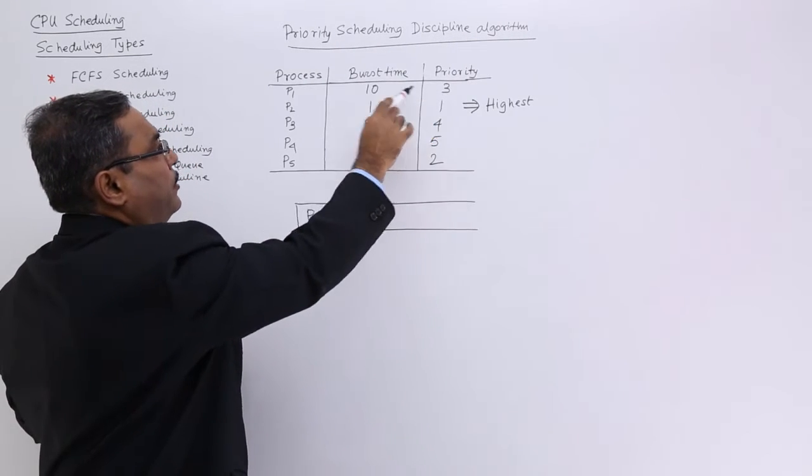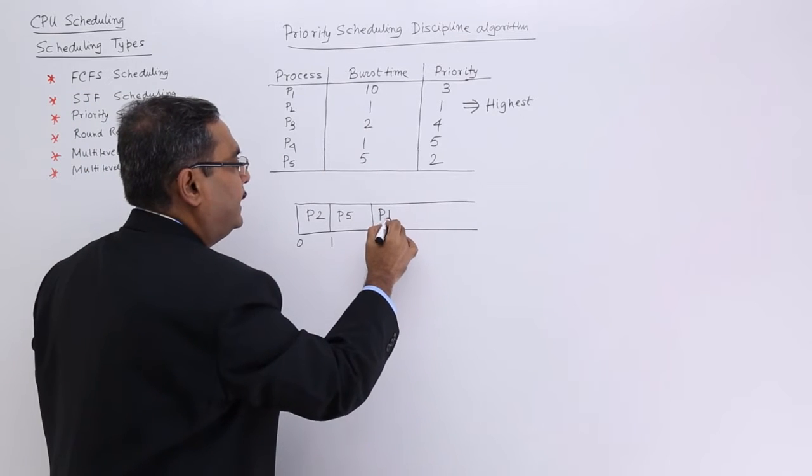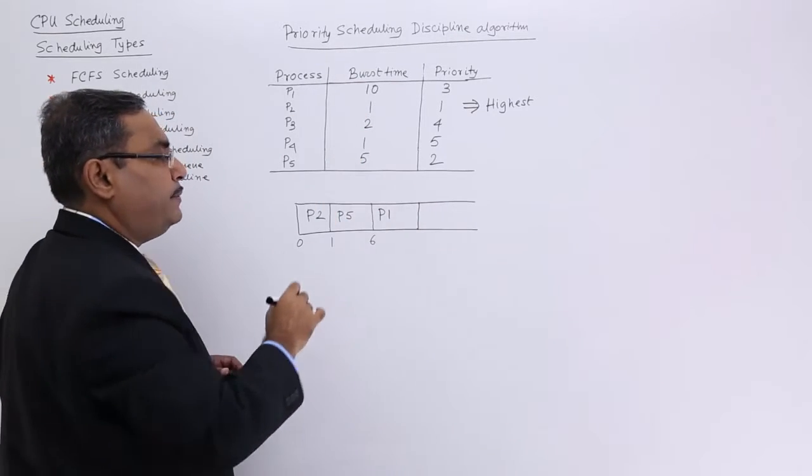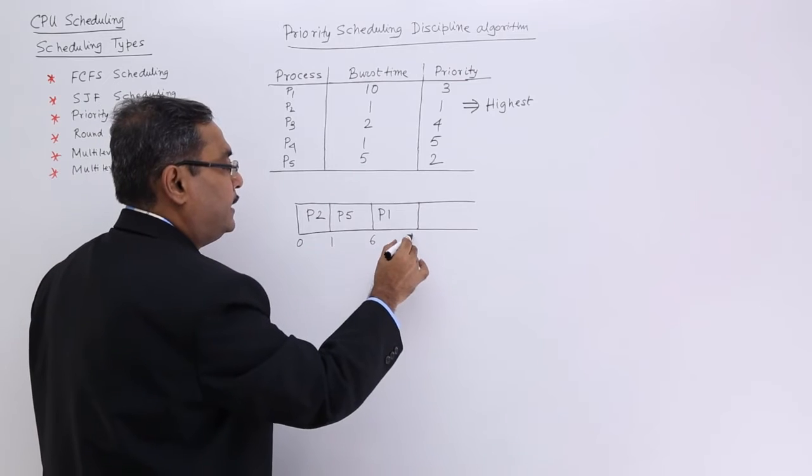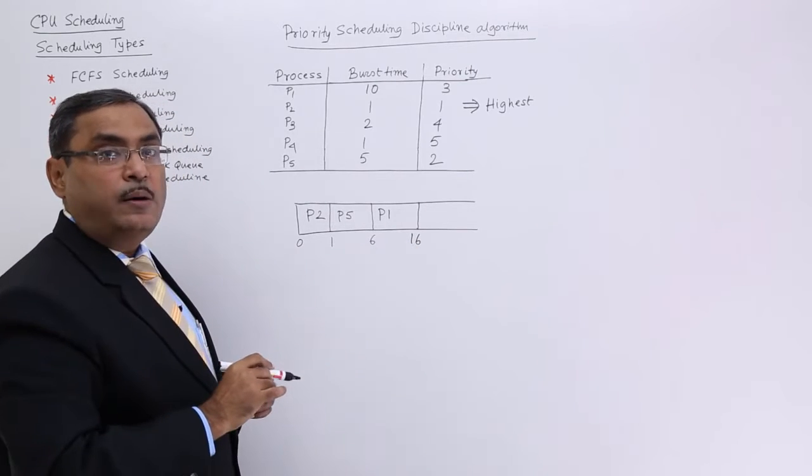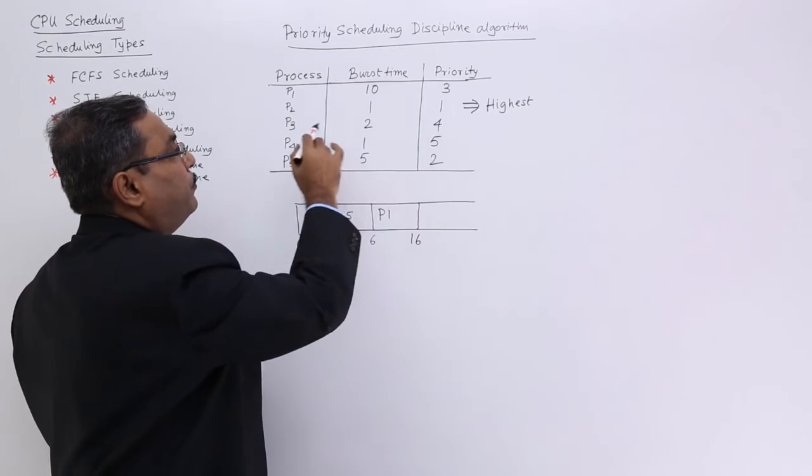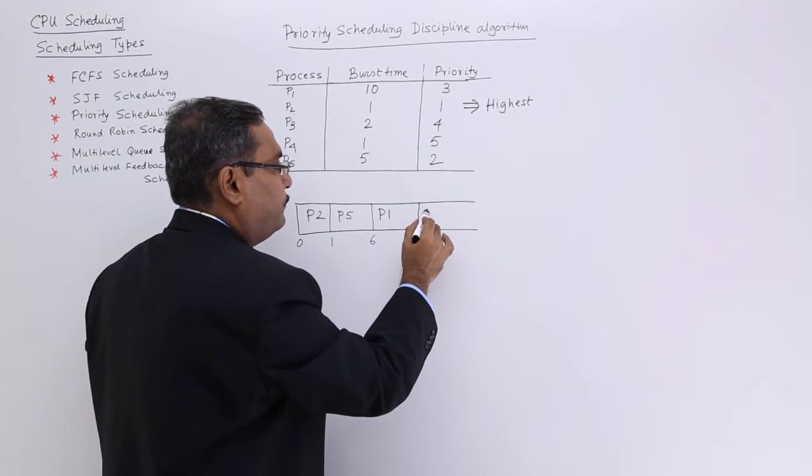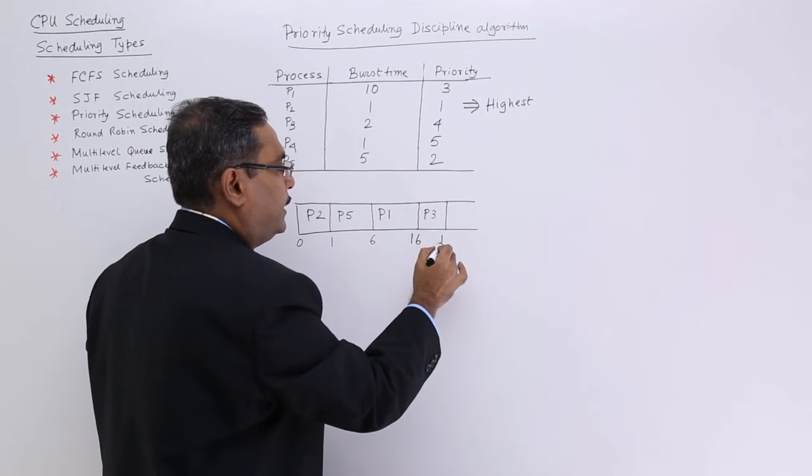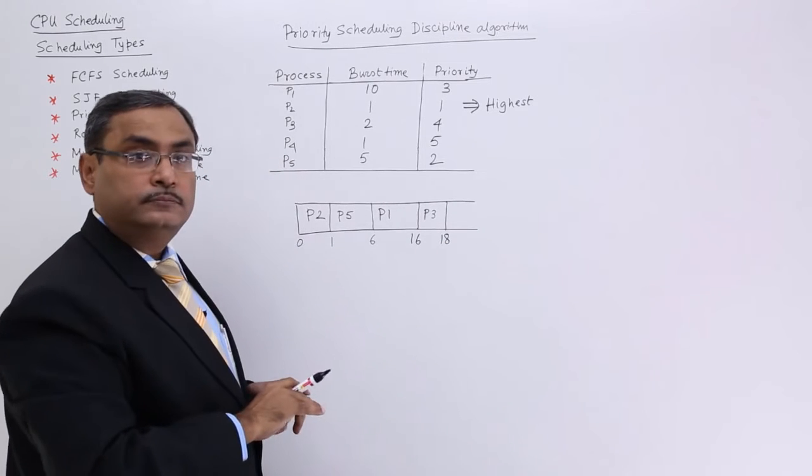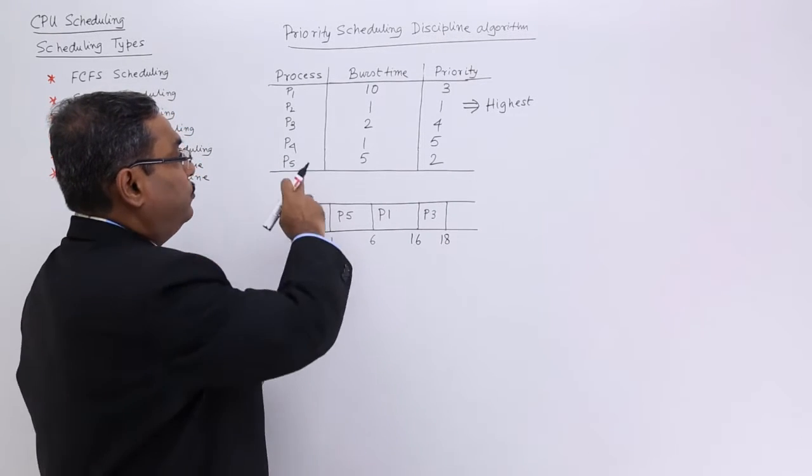So, now, which is having the priority 3? P1. So, P1 will get executed and its burst time is 10. So, 6 plus 10, 16 will be its completion time. Then, which is having the priority 4? P3. P3 is having the priority 4. So, it will get terminated at 18 because it is having the burst time of 2.